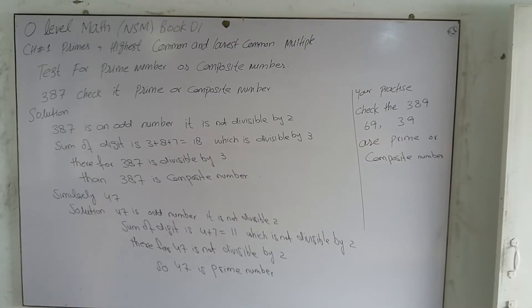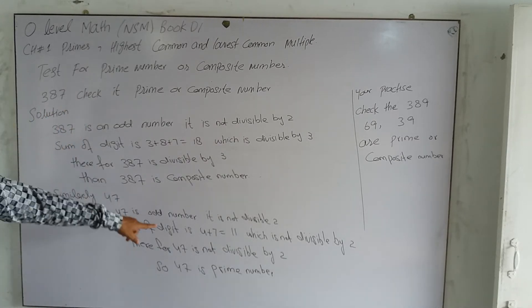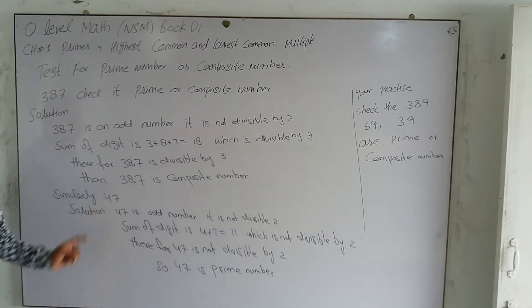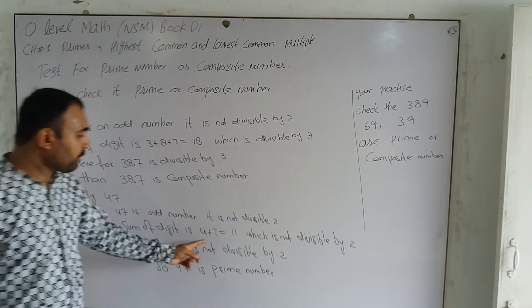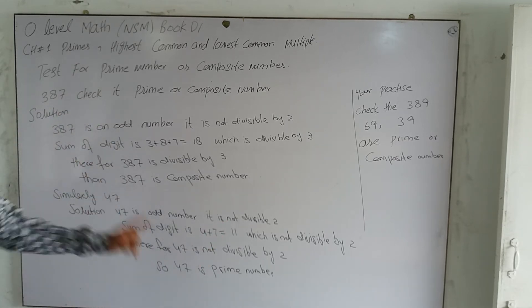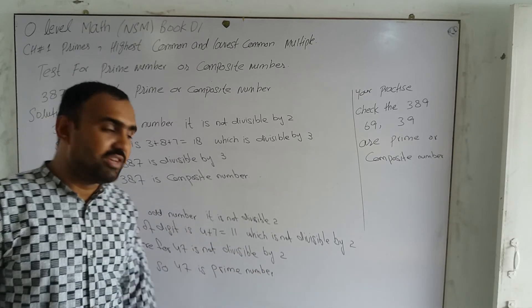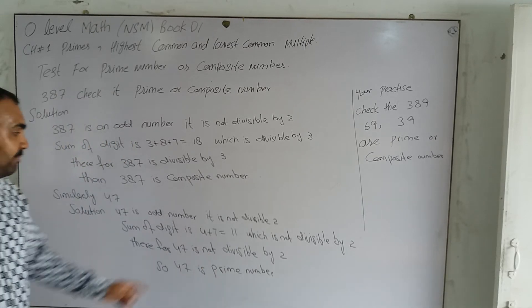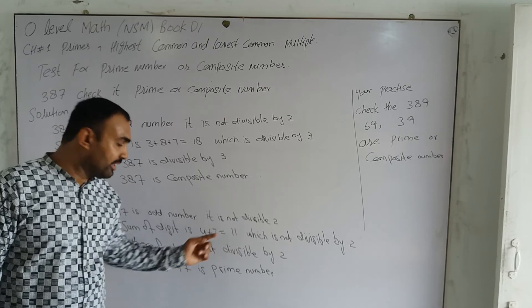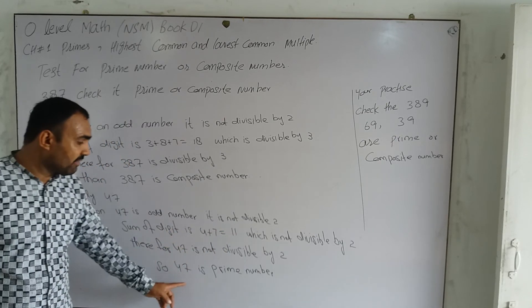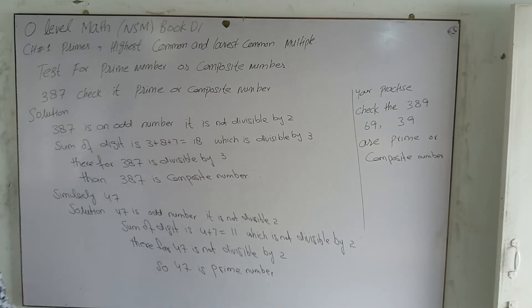Similarly, check 47. Solution: 47 is also an odd number, so it is not divisible by 2. Sum of digits is 4 + 7 = 11, which is not divisible by 3. Therefore, 47 is not divisible by 2 or 3, so 47 is a prime number.